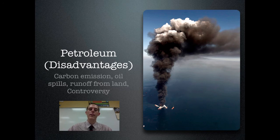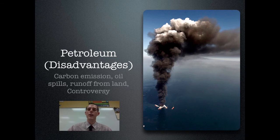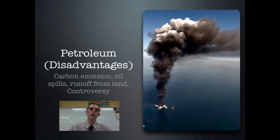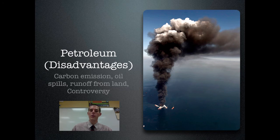Another major issue is land runoff: as cars drive and sit in parking lots they drip oil, and when it rains that oil washes into waterways. It's said that 85% of oil pollution actually runs off the land rather than coming from large-scale spills. Petroleum is also controversial — should we be drilling in wildlife refuges or exploiting sensitive habitats to extract oil? It represents the classic environmental science controversy between protecting the environment and maintaining the way of life we've become accustomed to.